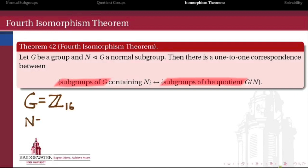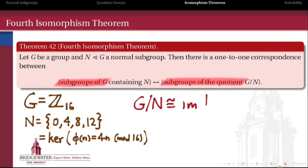So Z mod 16 is our group, and {0, 4, 8, 12} is our normal subgroup. What we can think of that as being the kernel of the multiplication by 4 map. And therefore the quotient G mod N is isomorphic to the image of that homomorphism by the first isomorphism theorem. And the image of the multiplication by 4 map in Z mod 16 is also {0, 4, 8, 12}.